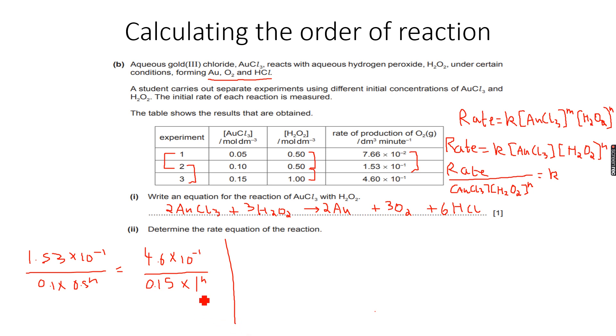So now when we bring the n terms to one side, it will be 1 to the power of n over 0.5 to the power of n, which is equal to 4.6 times 10 to the power of minus 1 times 0.1 - cross multiplication is what I'm doing right now - over 1.53 times 10 to the power of minus 1 times 0.15.